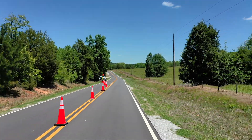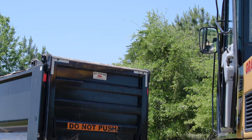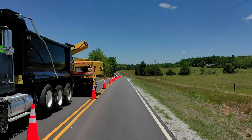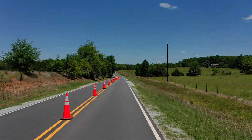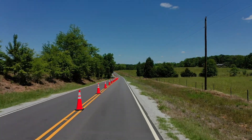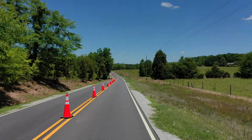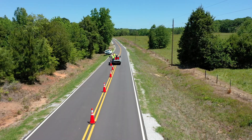The third area is the activity area. In this section of the TTC zone, the work activity takes place. This area is comprised of the workspace, the traffic space, and the buffer space. It is important to note that the buffer space separates road users from the workspace and might provide some recovery space for an errant vehicle. Neither work activity nor equipment should be within a buffer space.